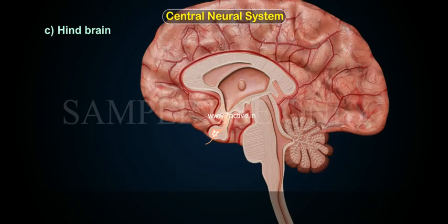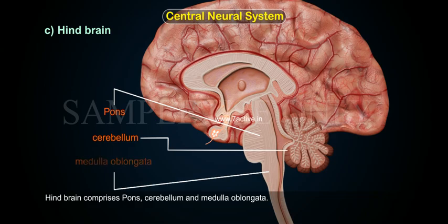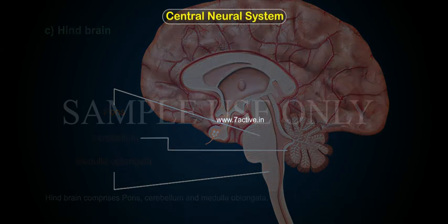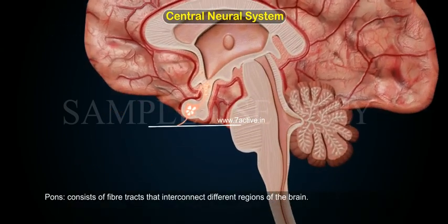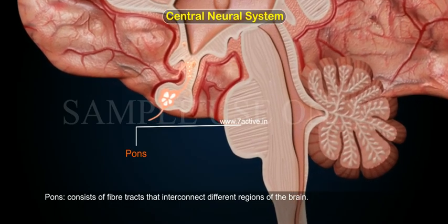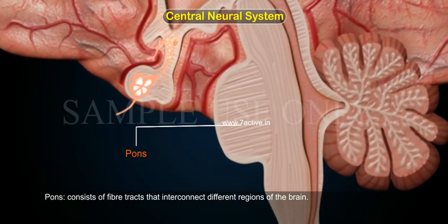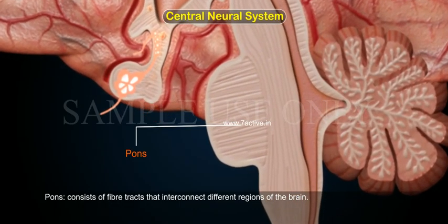C. Hindbrain. Hindbrain comprises pons, cerebellum and medulla oblongata. Pons consists of fibre tracts that interconnect different regions of the brain.